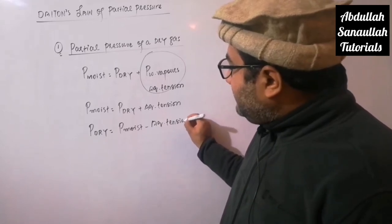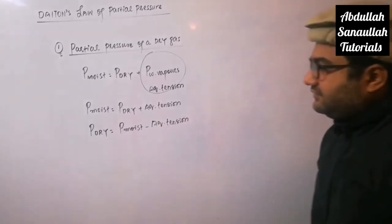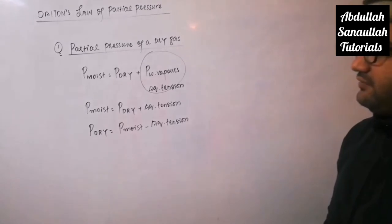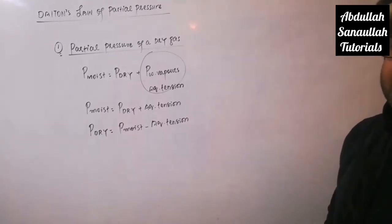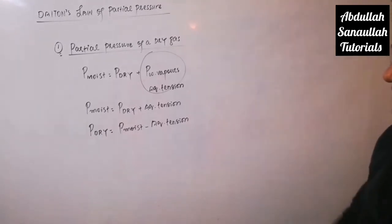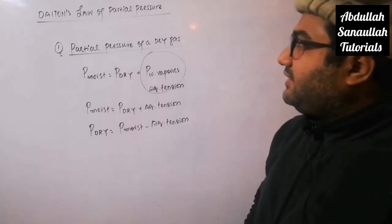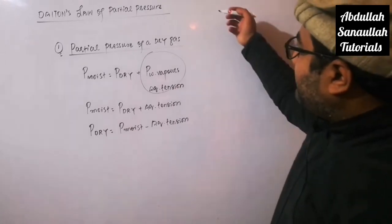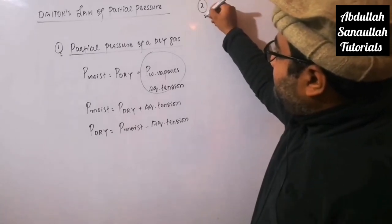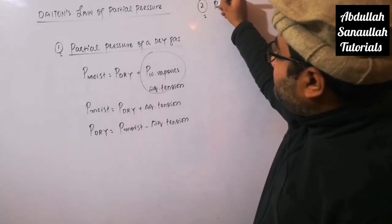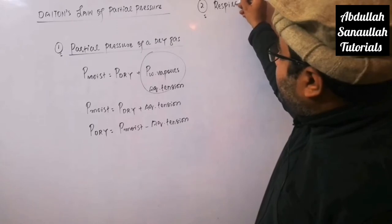So when you subtract the partial pressure of the water vapors from the total pressure of the moist gas, you will get the partial pressure of the dry gas. This is the first application of Dalton's law of partial pressure. The second application is respiration.